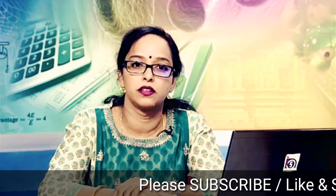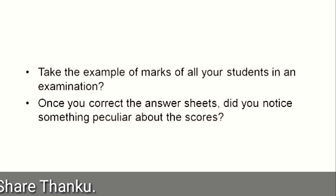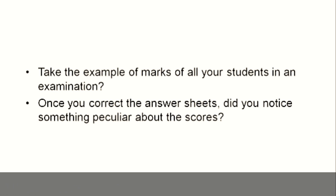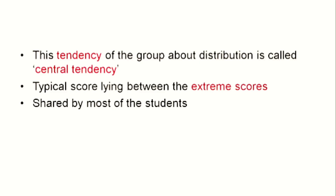For example, consider the marks of all your students in an examination. Once you correct the answer sheets, did you notice something peculiar about the scores? Yes, very few students score high marks, very few students score low marks, and the majority of marks lie between the highest and lowest. This tendency of the group's distribution is called central tendency. In other words, central tendency is the typical score lying between the extreme scores.